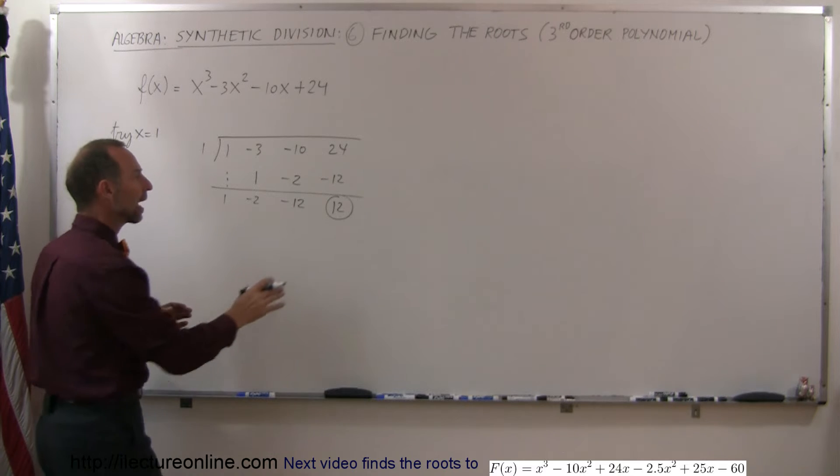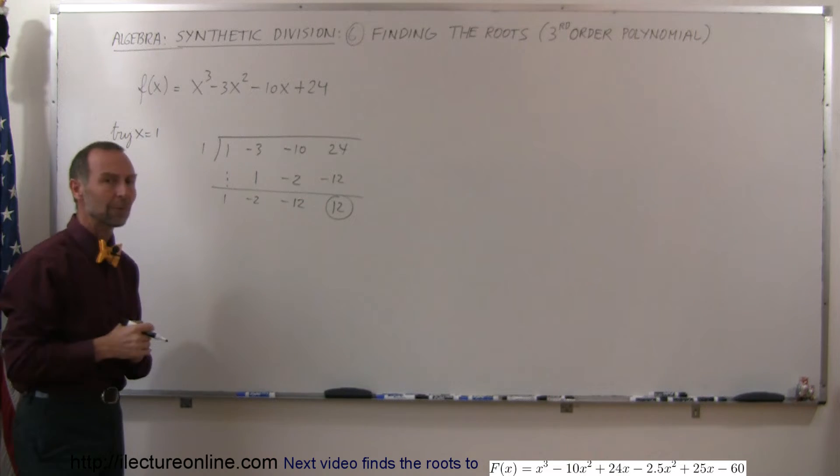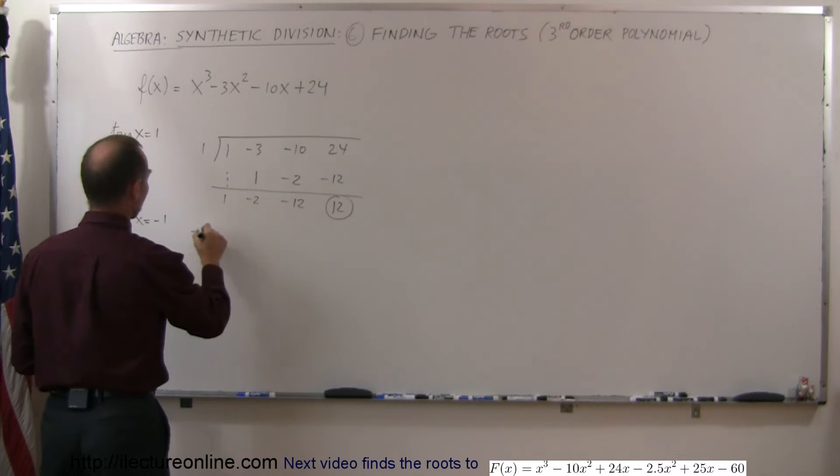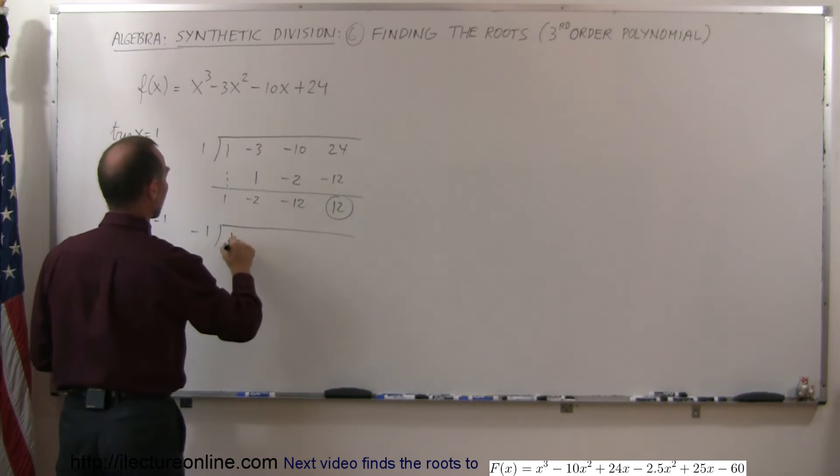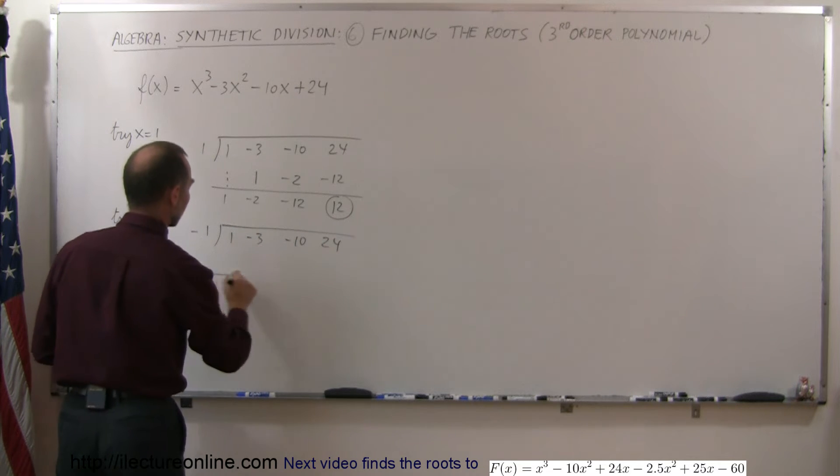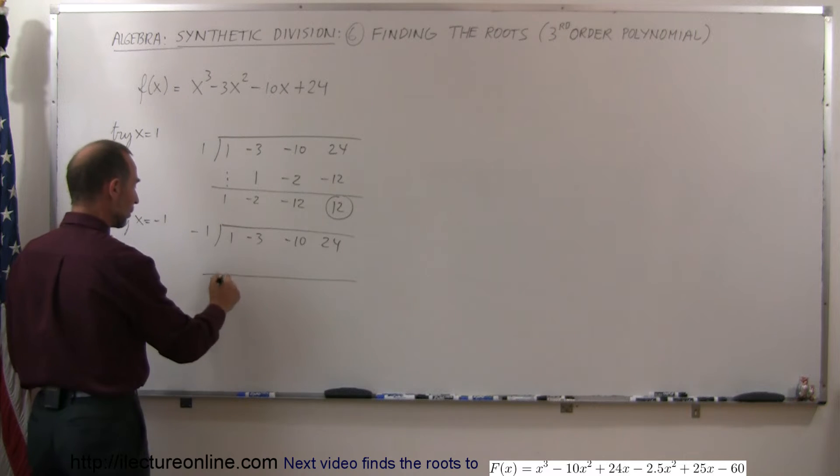But keep in mind that this actually does tell us something. So now we're going to try our next try. How about try x equals negative 1. So negative 1. Use the same coefficients. 1, negative 3, negative 10, 24. Come down here, put the line down, drop the 1.